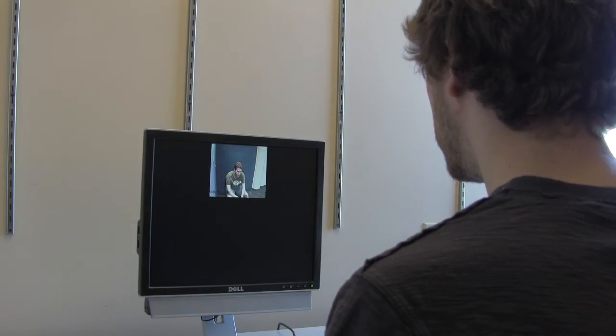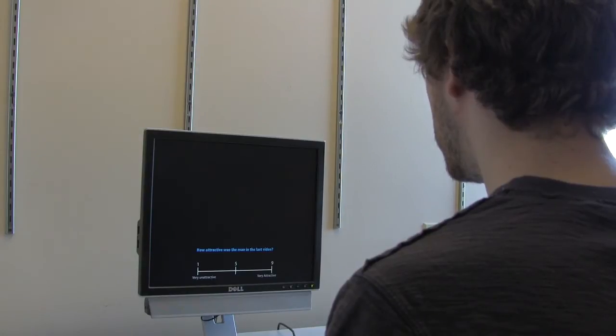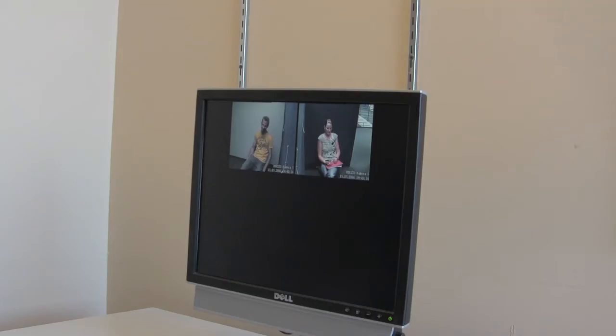He would also judge how attracted he is to that woman, both before he sees the speed dating interactions and after. If his interest in the woman in the speed dating video increases as a result of watching another man having a positive interaction with her, then this is an instance of mate choice copying.